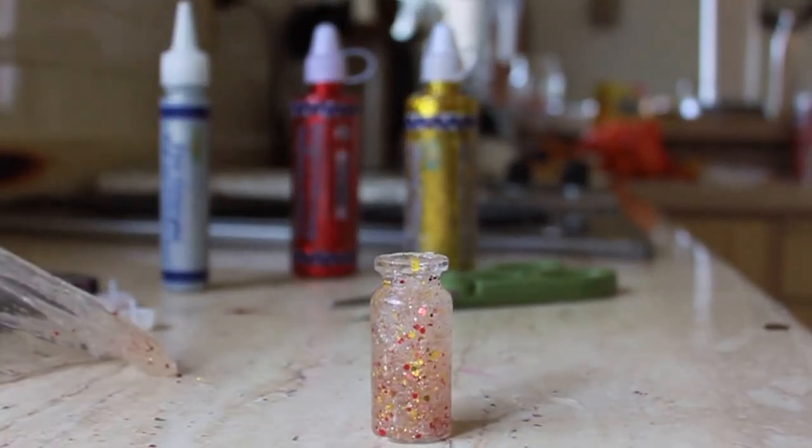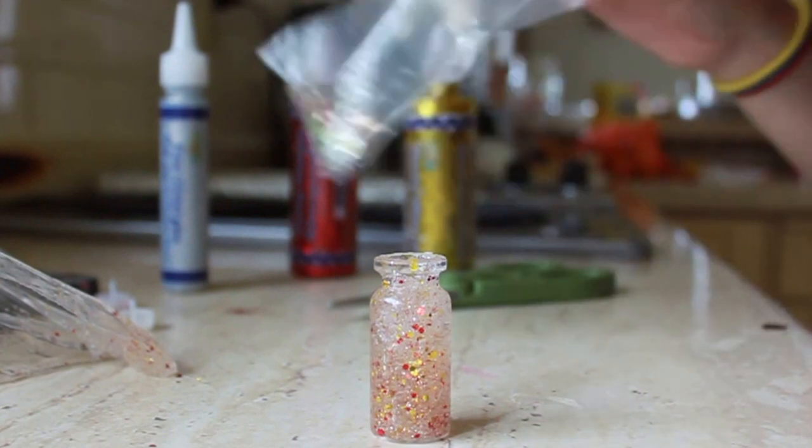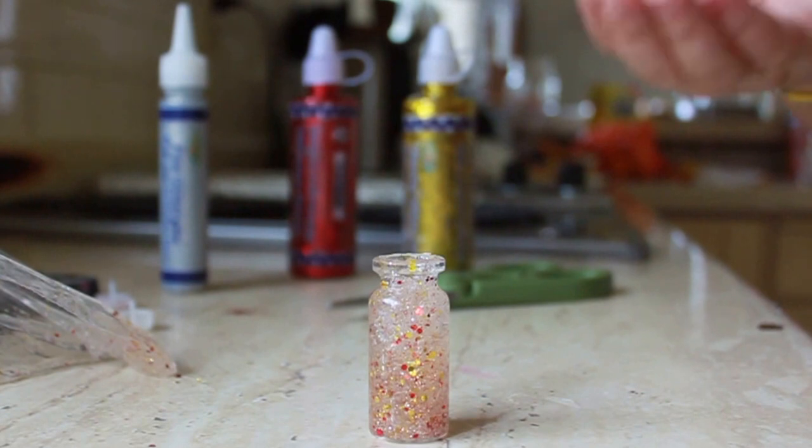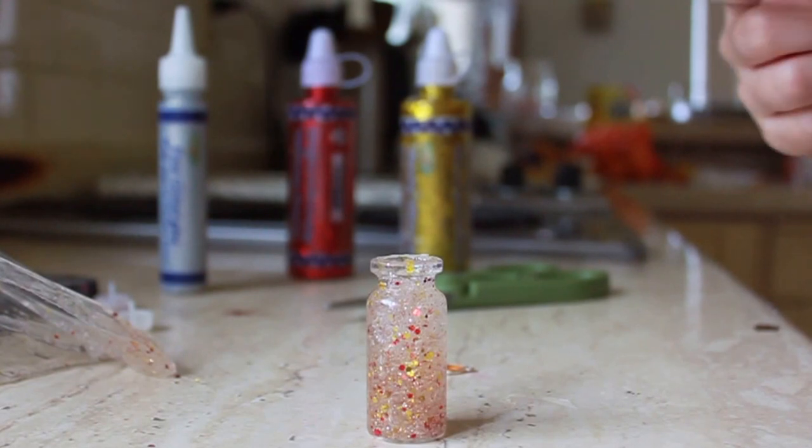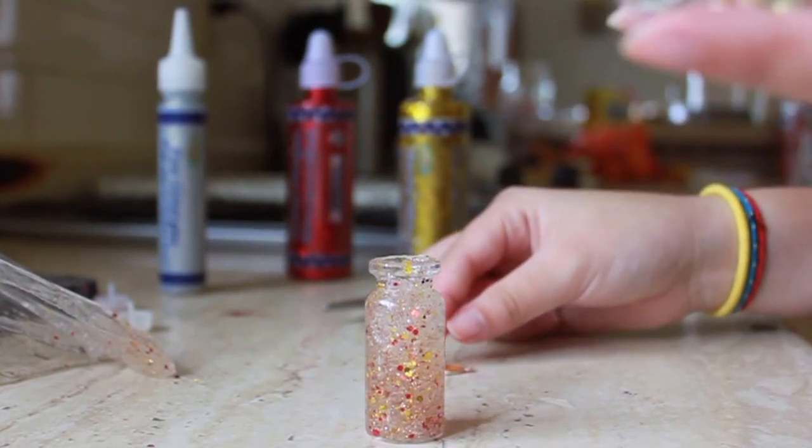Now take your charms and choose one that you want to put in. So since I have red, gold, and silver glitter, I'm going to be putting in red and gold and silver charms.